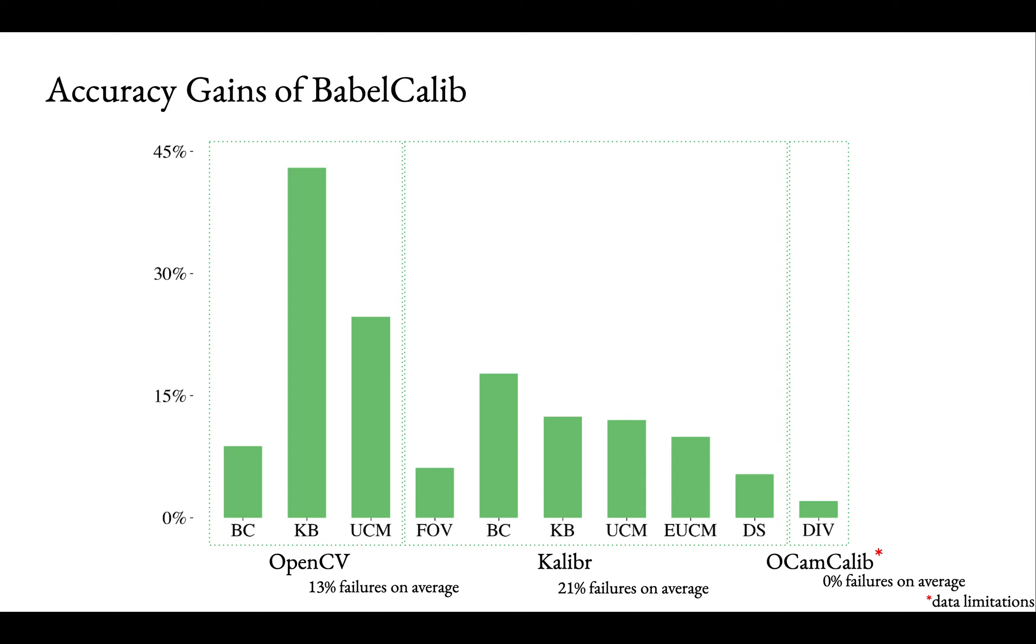During evaluation, the state-of-the-art failed several times. These failures were not used to compute accuracy. In contrast, BabelCalib never failed, therefore it was evaluated on the entire data set. Note that OCam Calib was tested on a small subset only due to software restrictions.